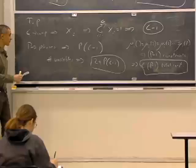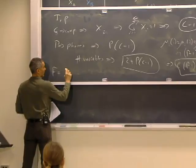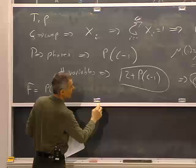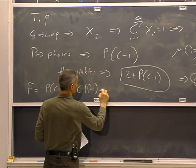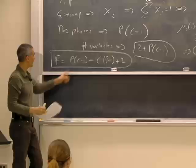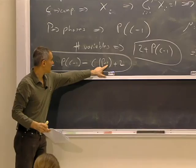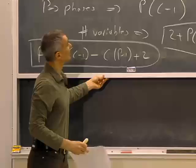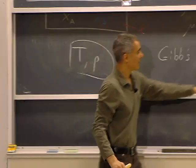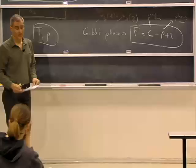This is true for every single component — every component has its chemical potential equal throughout the phases. So P minus one constraints for one component, times C components, gives a total of C times (P minus one) total constraints. The number of degrees of freedom then becomes: two plus P times (C minus one), minus C times (P minus one). Multiplying this out, the P times C terms cancel, and you get C minus P plus two — which is the Gibbs phase rule. It's just purely an accounting of variables and constraints.